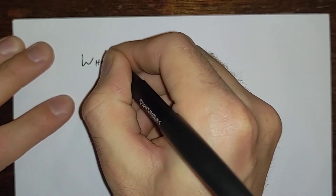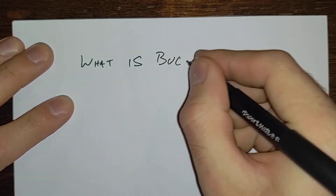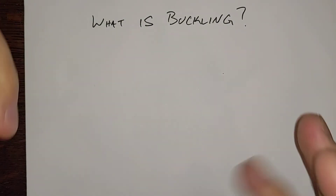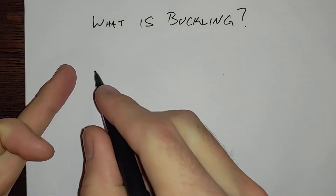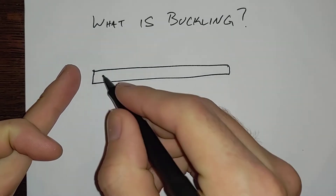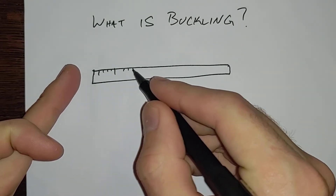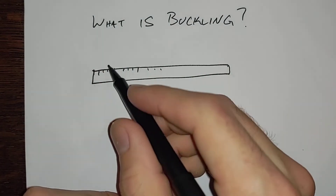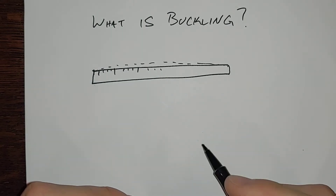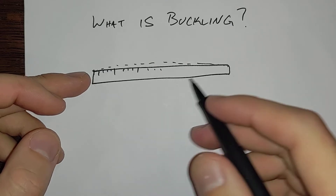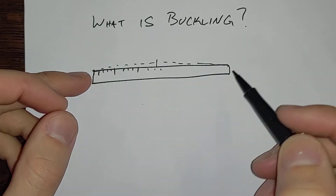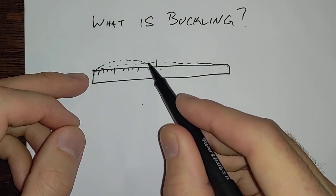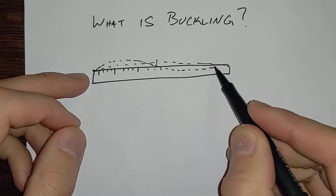What is buckling? If you've ever taken a ruler and held the ends — here's our little ruler with all our divisions on it — and you push it in, you've seen that ruler bow on you pretty quickly. If you hold that ruler in the middle, keep it from bowing, and try to push it in again, it becomes much more difficult to bow, and when it does go, you get an S-curve.